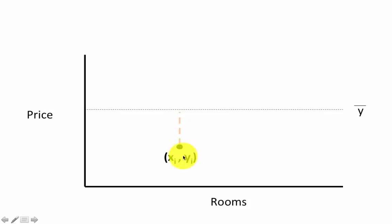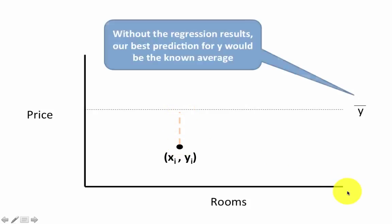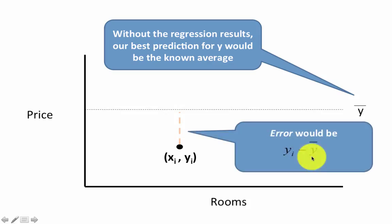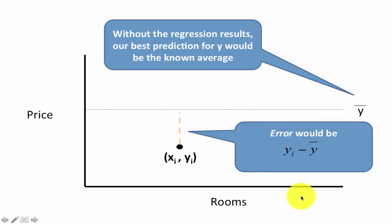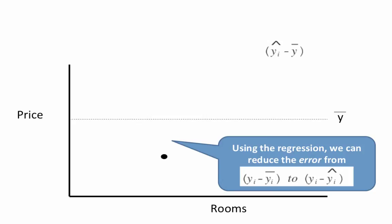But that prediction would be off. The actual price is y-i, and therefore the difference between the actual price and the predicted price is the residual, or error. So without the regression results, our best prediction is simply the average. The error or the residual would be y-i minus y-bar. It doesn't matter which order you put those attributes in because we will later square this value.